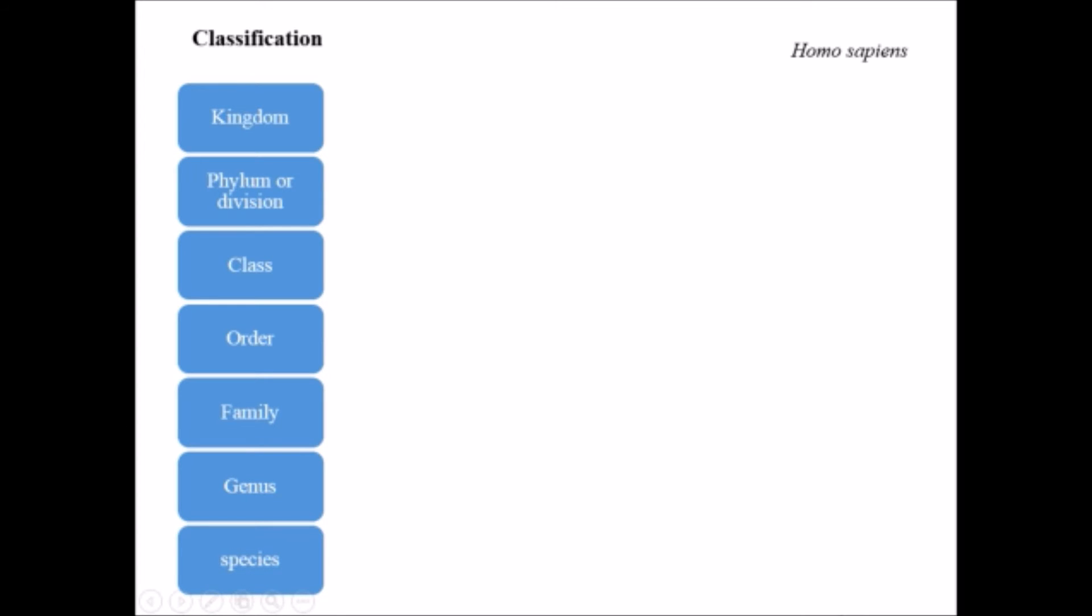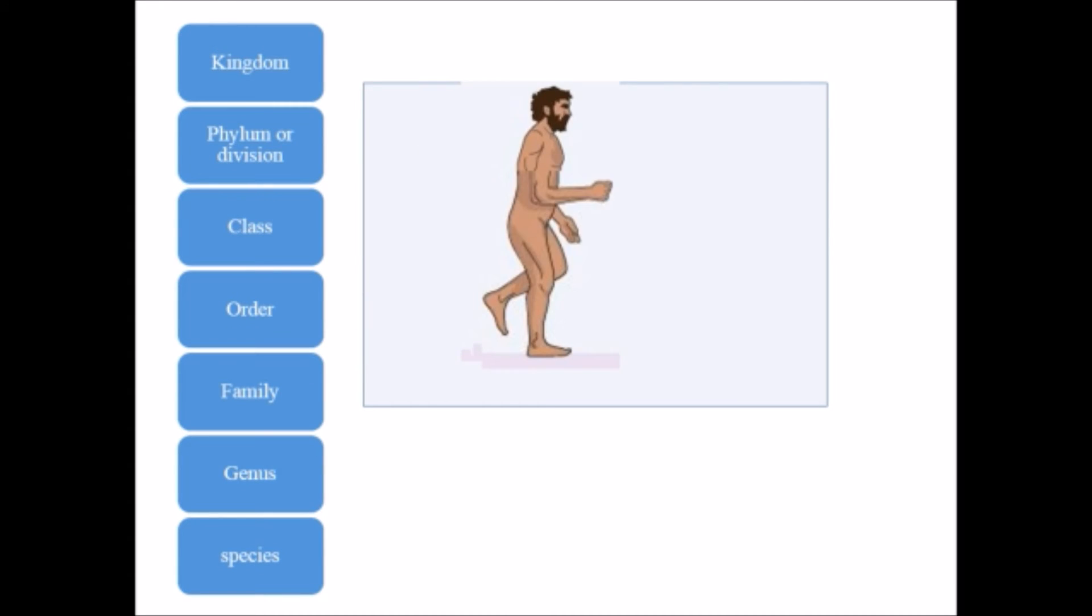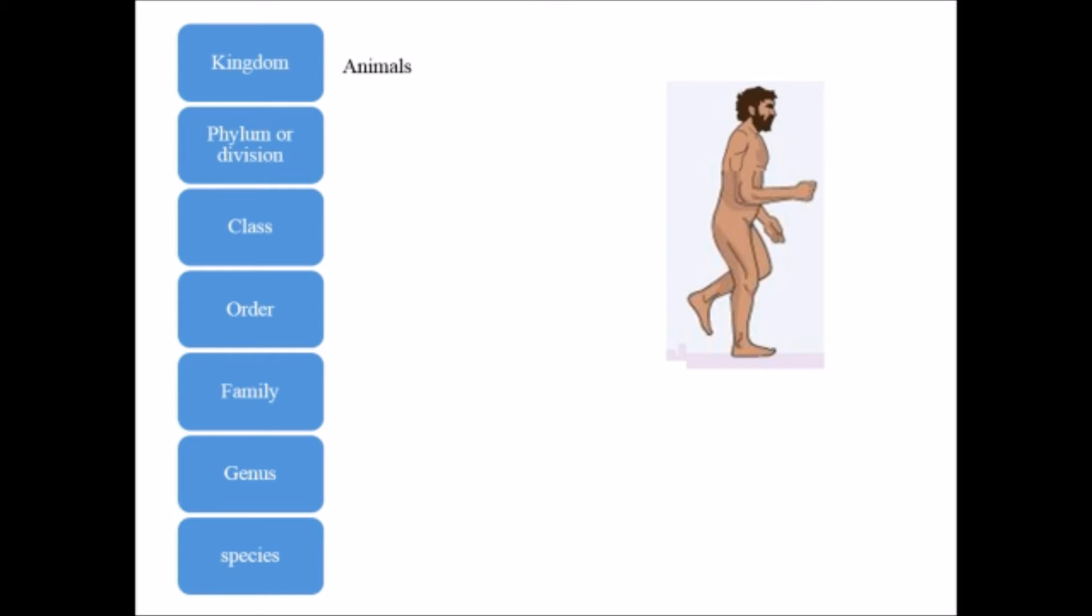I have again taken here the example of Homo sapiens. Homo sapiens belongs to the kingdom Animalia, which means any organism which can move on their own. It is classified under the phylum Chordata, which means having a spinal cord.